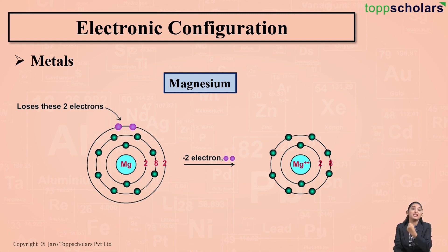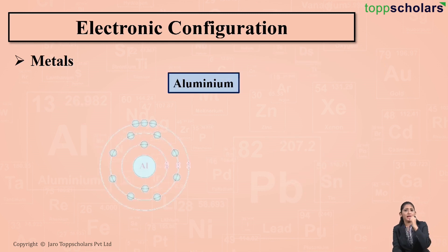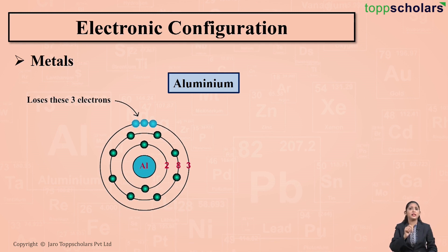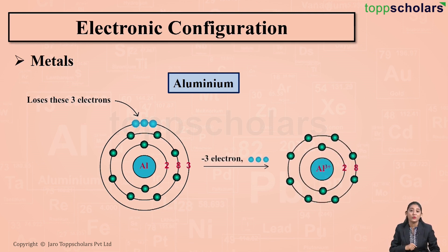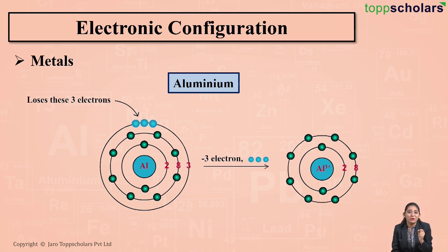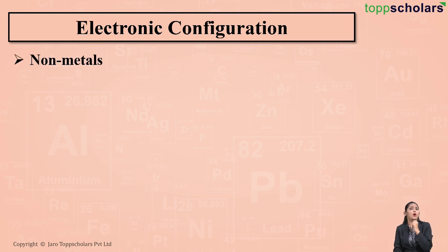Magnesium on losing these two electrons becomes stable with the octet state. What about aluminium? The electronic configuration of aluminium is 2, 8, 3, which means aluminium has three electrons in its outermost shell. In order to become stable, aluminium loses these three electrons and forms an Al3+ cation. There are then 8 electrons in the outermost shell, so aluminium becomes stable with the octet state.